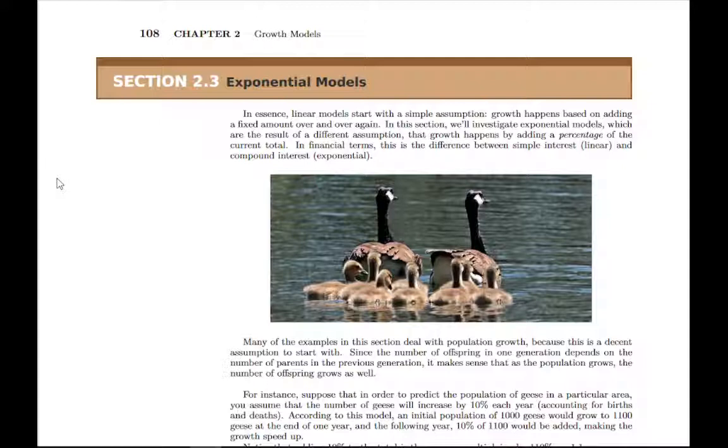You can read through this introduction, but basically the core concept is that an exponential model happens when you have growth happening as a percentage of the current amount. So however much your population is today, your population a year from now will be that plus a certain percentage. That would be exponential growth, and so population models often start with an exponential version.